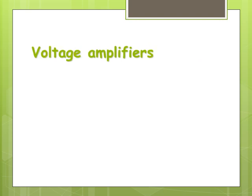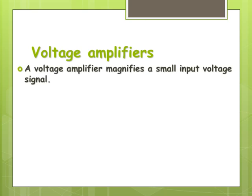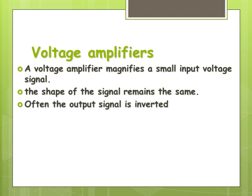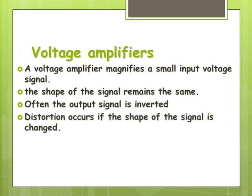So a voltage amplifier is there to amplify a voltage signal. So a small input signal is amplified to make the same thing but larger. Generally the shape is going to remain the same. Often the actual output signal is inverted or flipped upside down. We'll have a look at that shortly. And if the shape of the signal's actually been changed then we say distortion has occurred or the signal's been distorted.